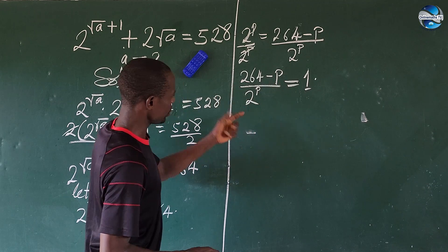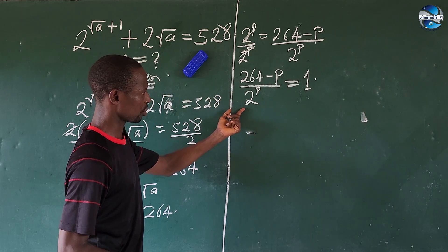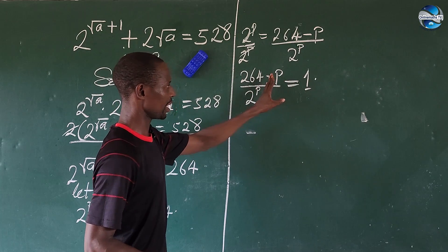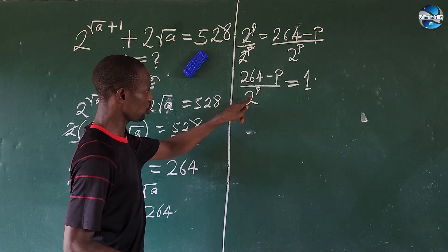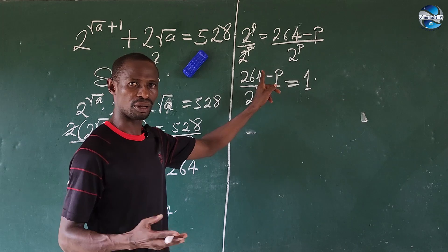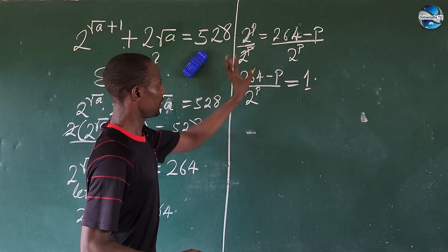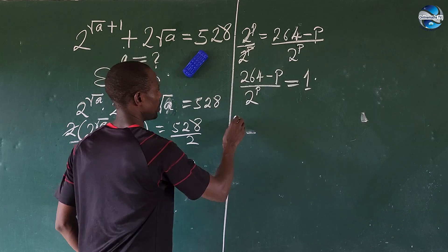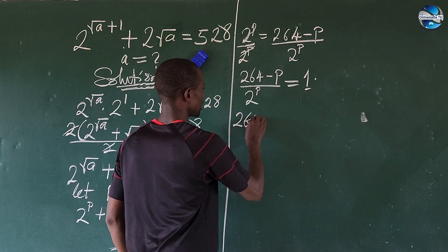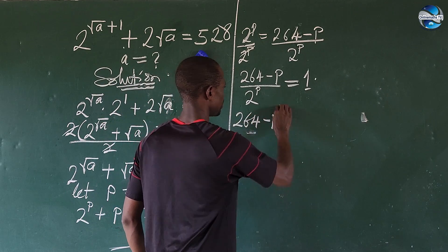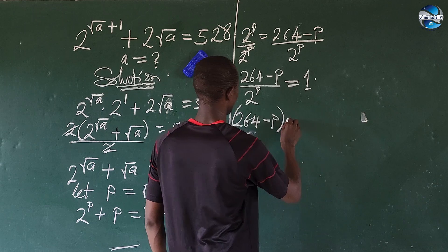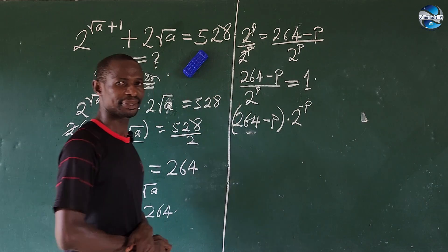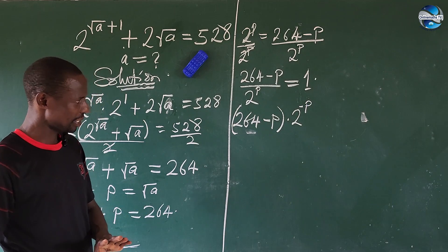We rewrite the expression by taking the denominator to the top using the law of indices, giving us (264 minus p) times 2 to the power of minus p, equal to 1.